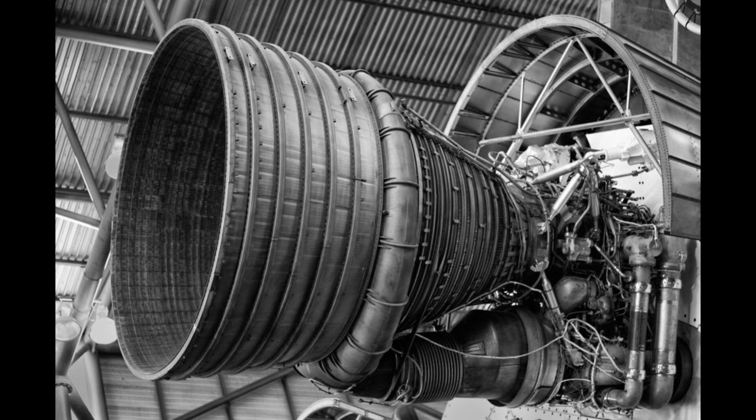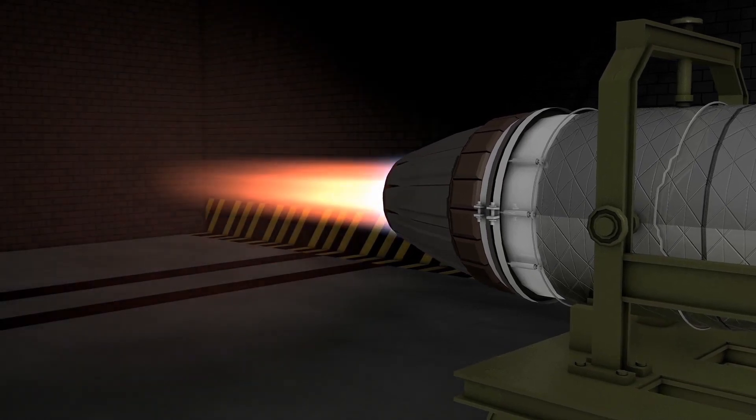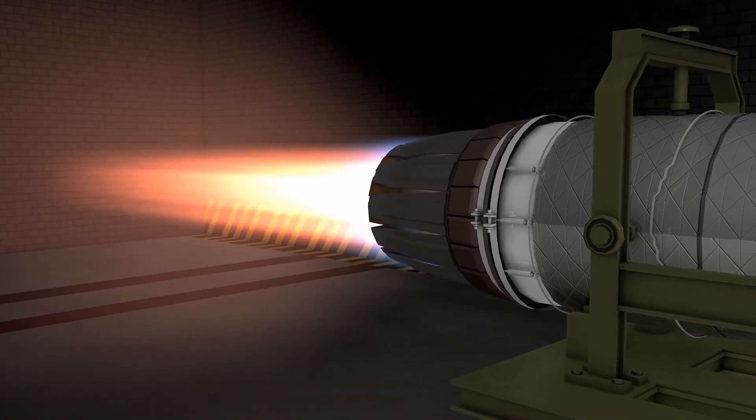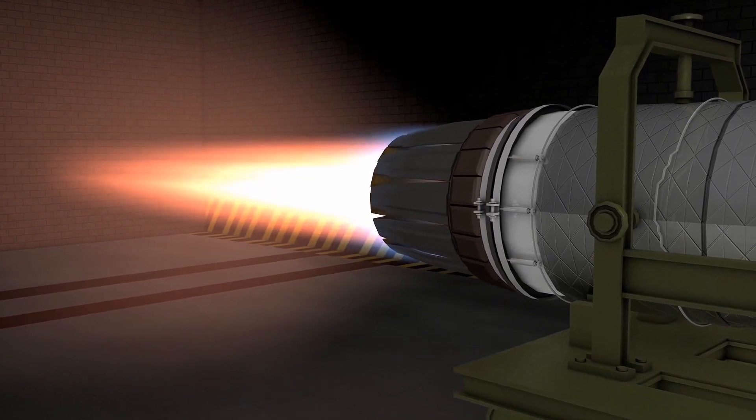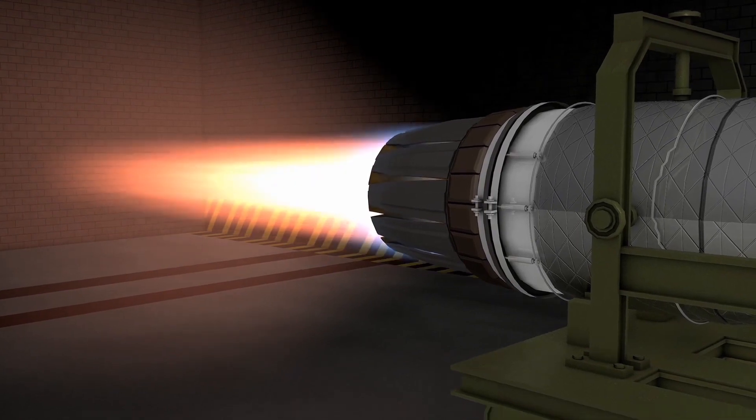3. Nozzle. The combustion gases are expelled through a nozzle at the rear of the rocket. The nozzle is designed to accelerate the gases and direct them in a specific direction. As the gases are expelled, they create a high-speed jet of exhaust gases moving in one direction, which generates thrust in the opposite direction, according to Newton's Third Law.